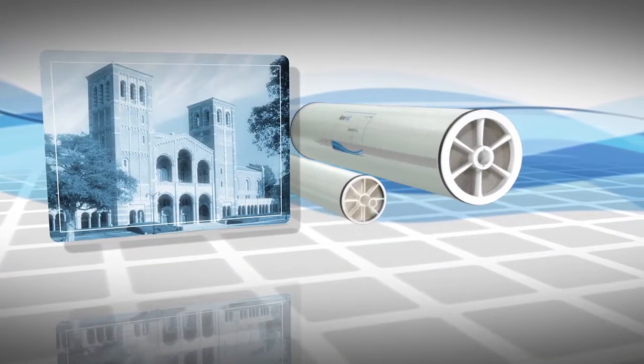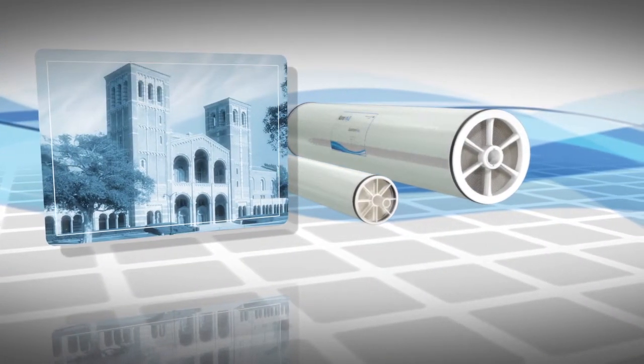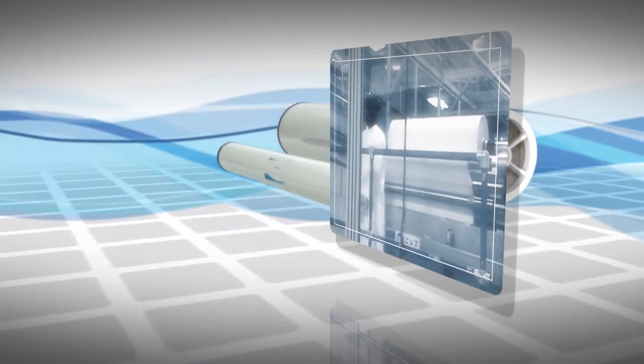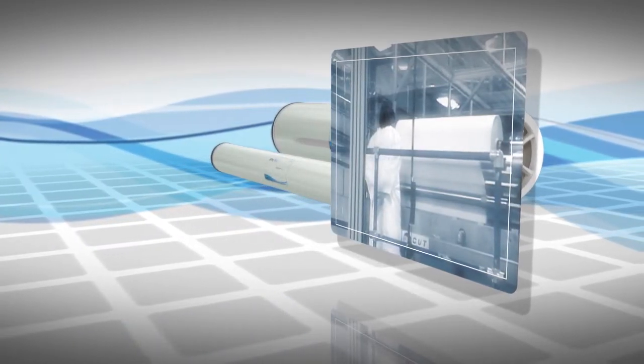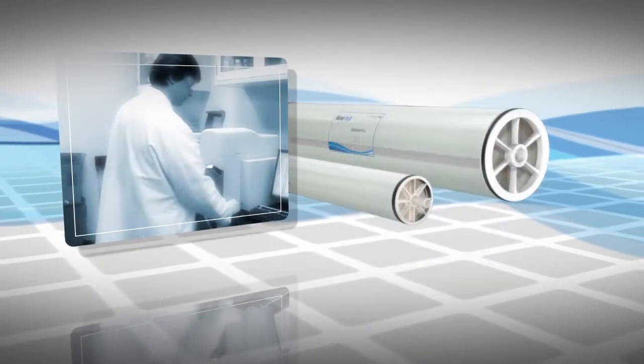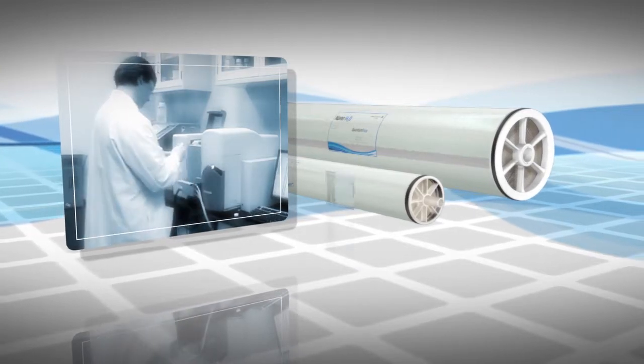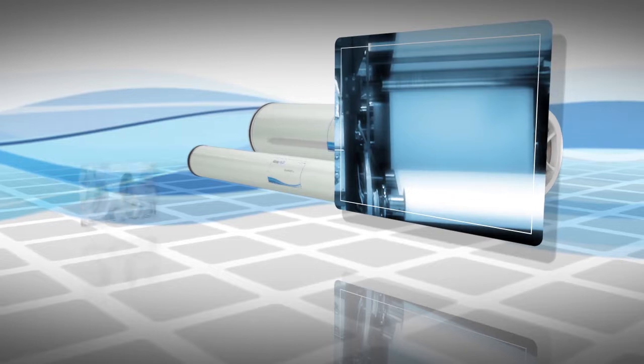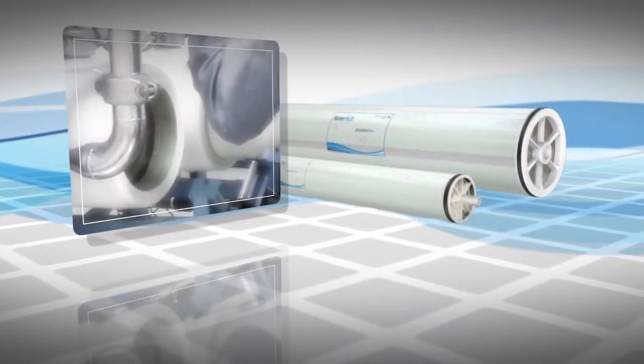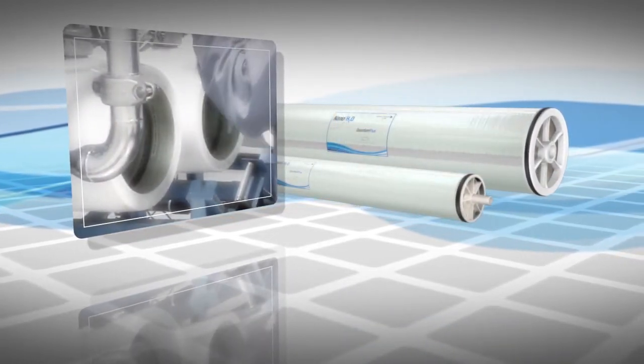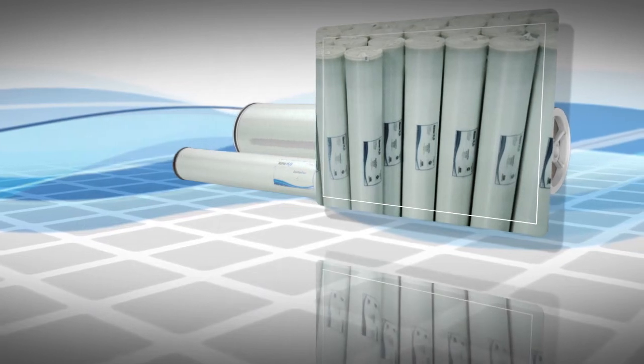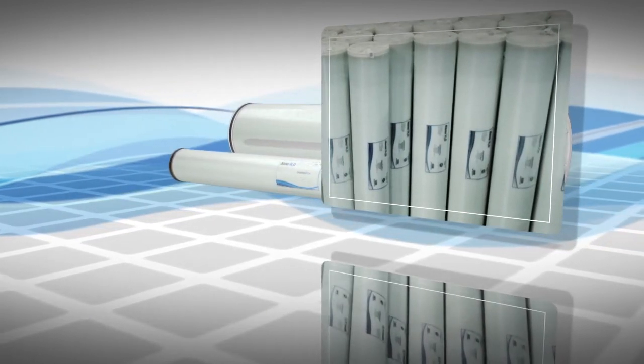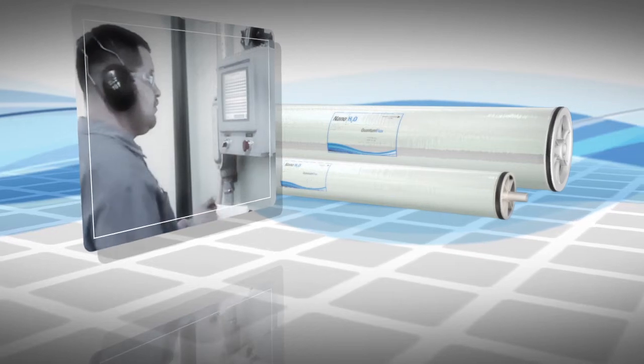Research at the University of California led to the discovery of membranes leveraging the benefits of nanotechnology. Today, Nano H2O manufactures the most productive and hence the most cost-effective seawater reverse osmosis membranes on the market. These membranes enhance industry-proven polymers, making them more productive. Scientists at Nano H2O have developed products that exceed long-standing industry performance standards.